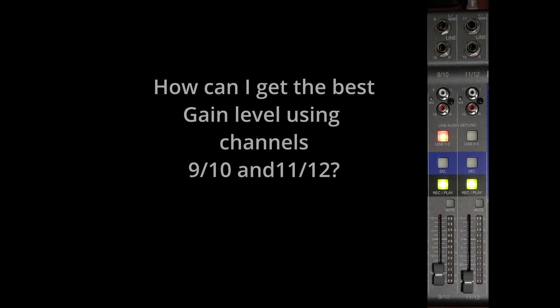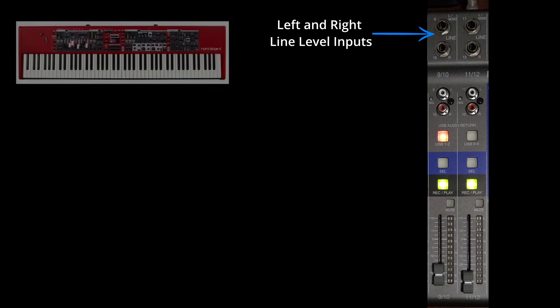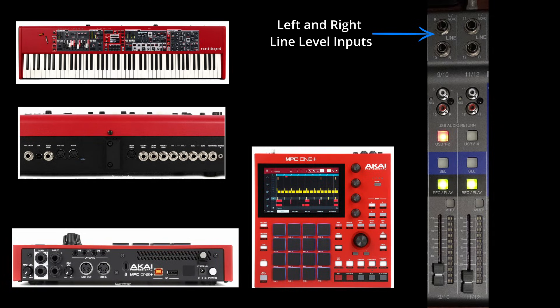Now to tackle a popular question: how do you manage gain on channels 9-10 and 11-12? These are stereo channels, each with two line level inputs. You can record either two stereo sources or two mono sources — for mono recording, just use the left input. There is no gain knob for these channels — they're designed for stereo devices like keyboards, synthesizers, and drum machines, where the instrument itself usually has a master output to control the signal level. The best approach: send the signal to the board, watch the SIG indicator and record level meter, and tweak the master output on the source device to dial in the optimal level.